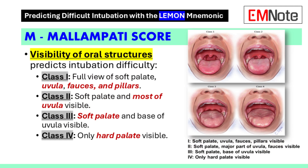Step 3: Mallampati Scale. The third component is the Mallampati scale, which evaluates the visibility of the uvula. If the full view of the uvula is visible when the patient opens their mouth, it suggests that intubation may not present significant difficulty. However, if no opening to the rear of the throat is visible, it indicates a potentially difficult airway.